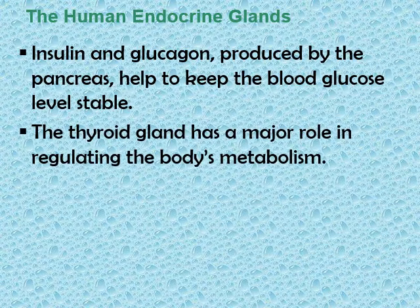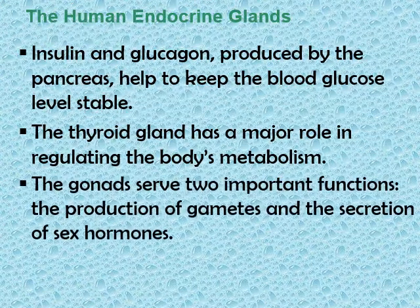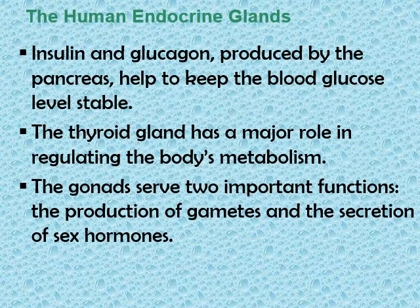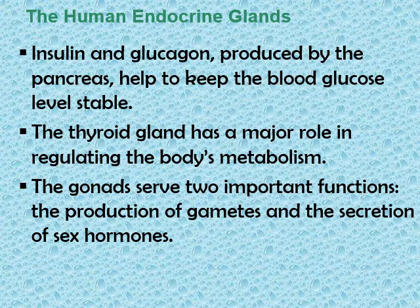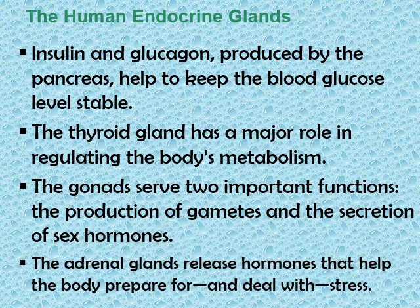The thyroid gland has a major role in regulating the body's metabolism. The gonads, or reproductive glands, serve two important functions: the production of gametes or sex cells, and the secretion of sex hormones. The adrenal glands release hormones that help the body prepare for and deal with stress.